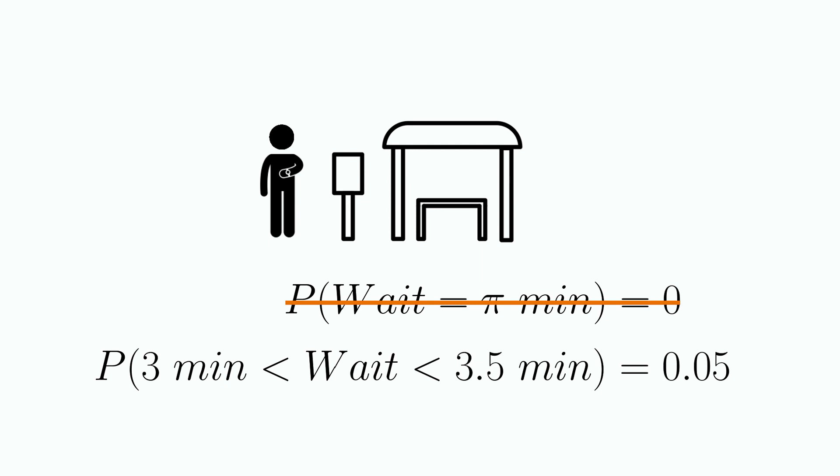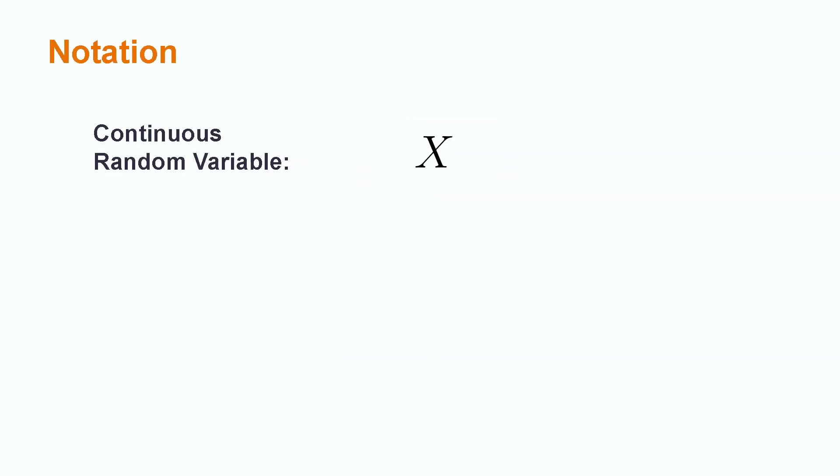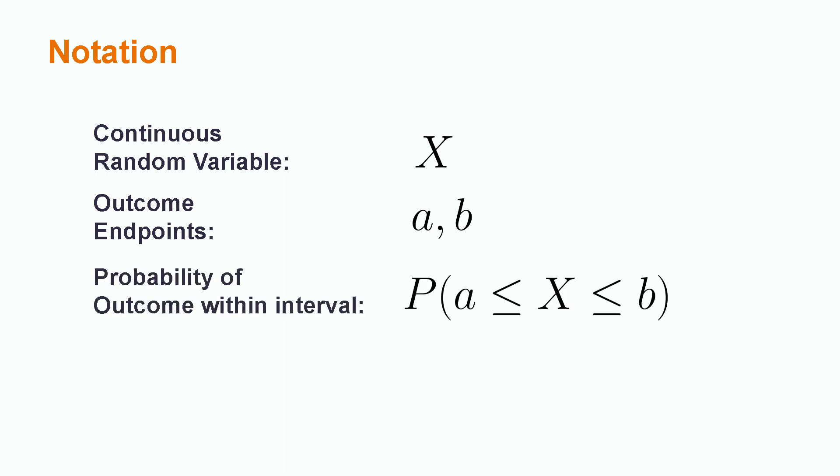Let's formalize the notation that we use for this. The continuous random variable itself is represented by a capital Latin letter, generally X. We write the endpoints of an interval on which we want to discuss the random variable as lowercase a and b, and we write down the probability of an outcome within an interval as the probability of a less than or equal to X less than or equal to b. a will always represent the lower bound of the interval and b the upper bound.